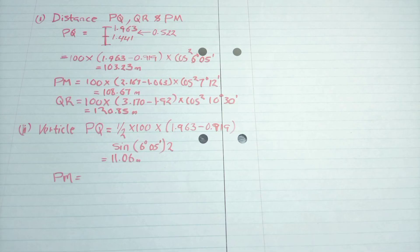There we will get 11.06 as our vertical distance for P-Q. Then we will do the same for P-M, which will be a half times 100 times S, sine θ, then times 2, and we get 13.84.